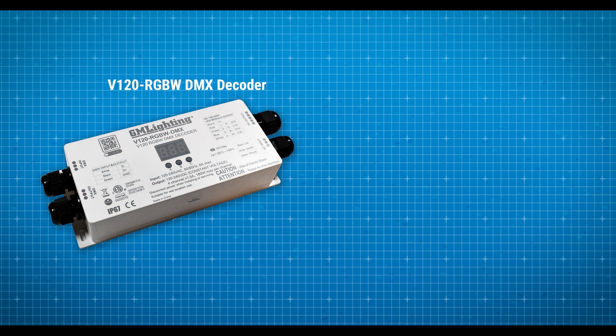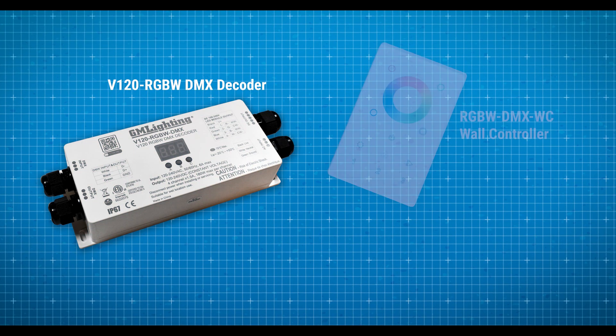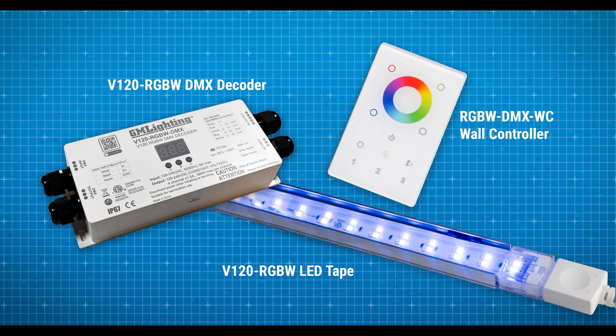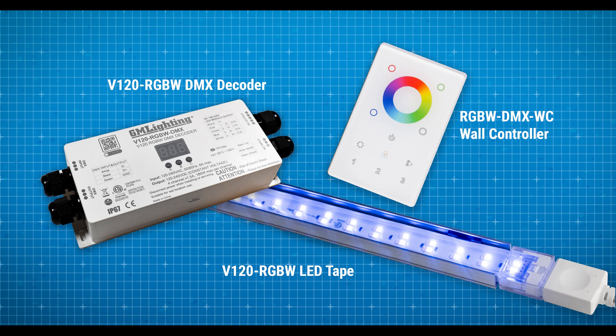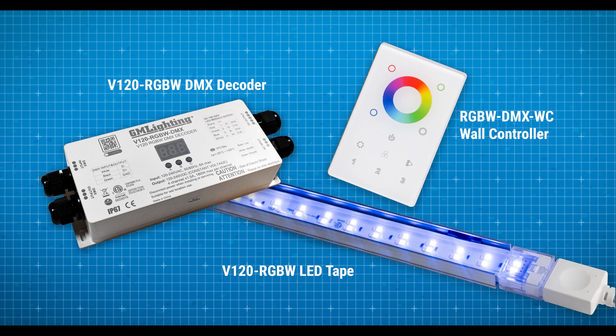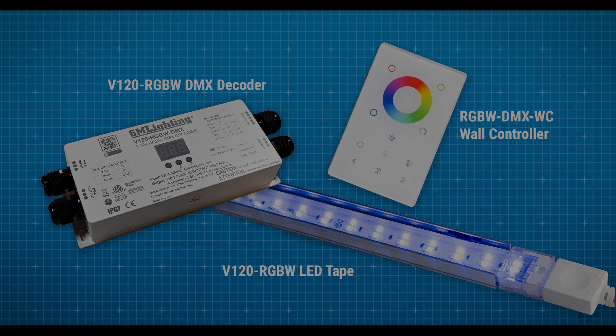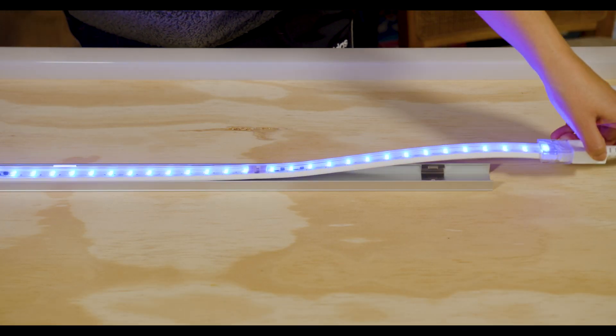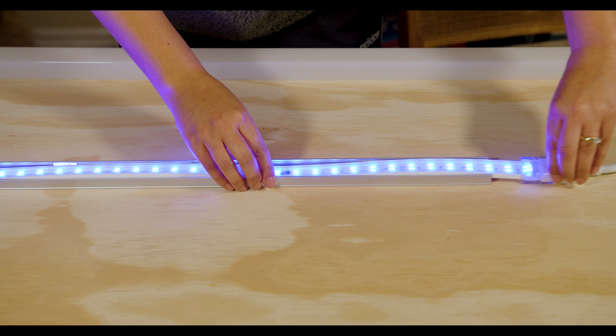Our installation today will include a V120 RGBW DMX decoder, an RGBW DMX WC wall controller, RGBW tape which is custom cut at the factory. In this demonstration, we are connecting a 24-foot length of tape to the DMX decoder. We'll be demonstrating mounting in a V120 RGBW CHL 4-channel that comes with a lens.